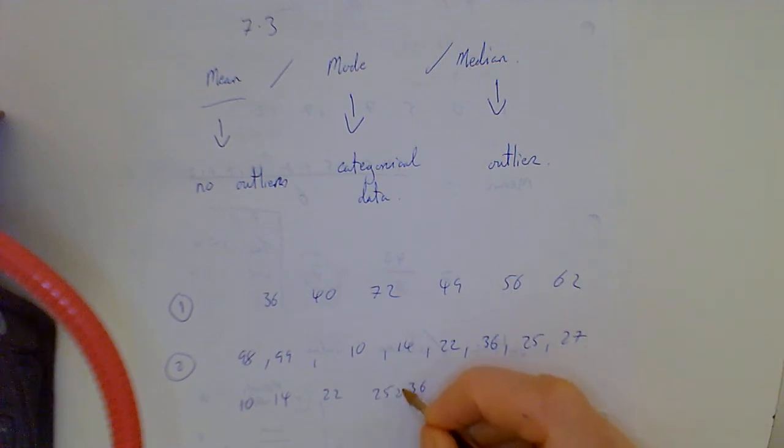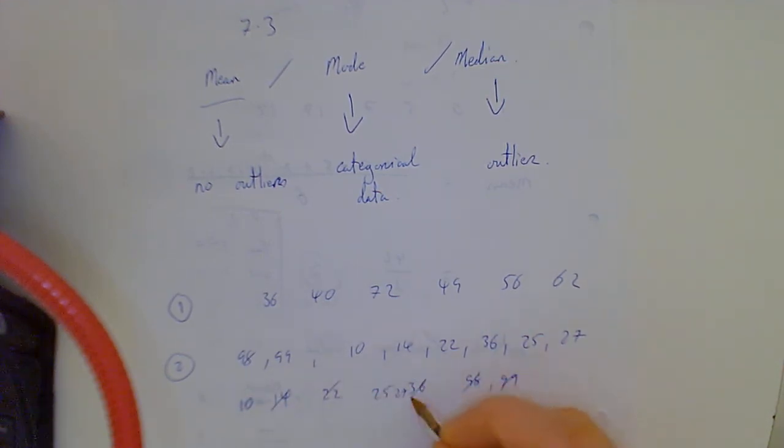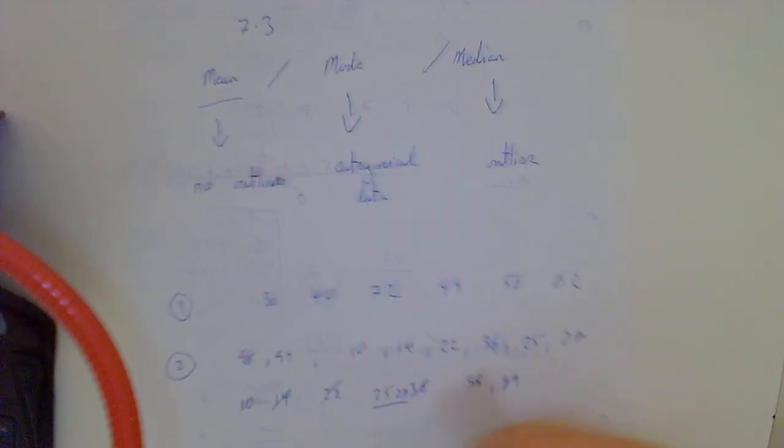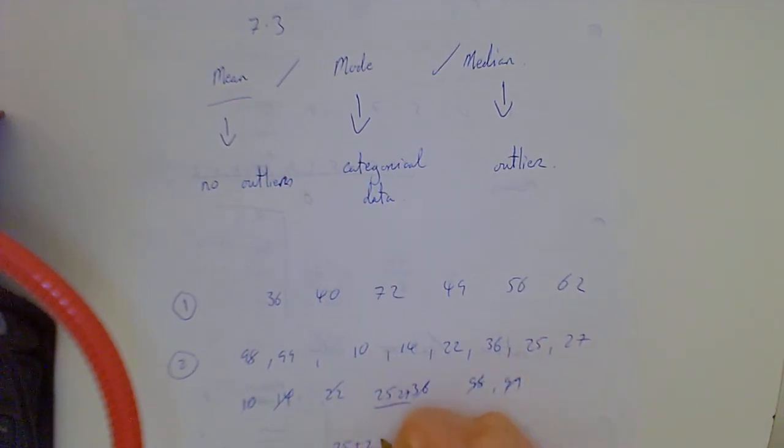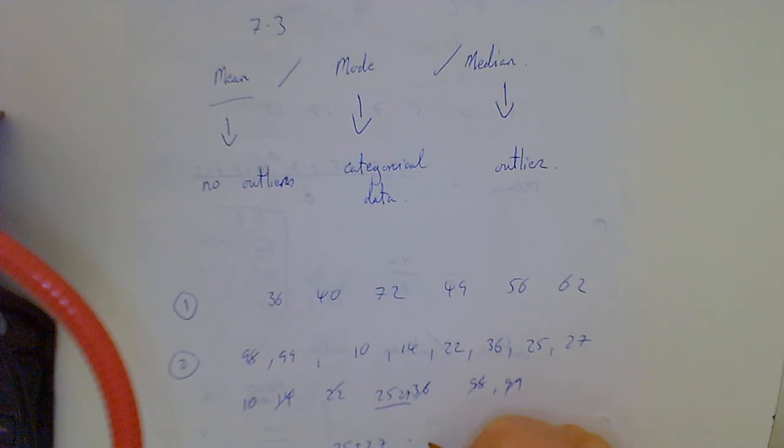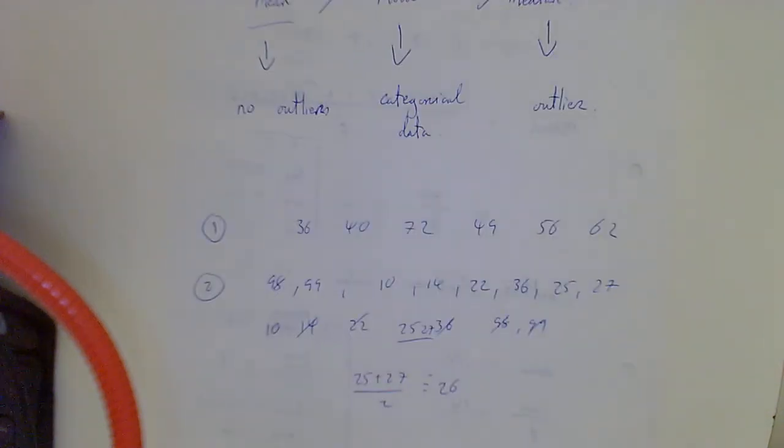There's 27 in there as well, 98, 99. Cross out the first, cross out the last. Second, second last. Third, third last. I'm left with the two numbers in the middle: 25 plus 27 over 2, that equals 26. 26 is my median.